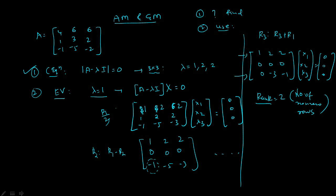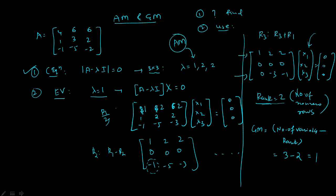Why is rank important in the AM/GM concept? Because the geometric multiplicity GM equals number of variables minus rank. We have 3 variables and rank is 2, so GM equals 1.